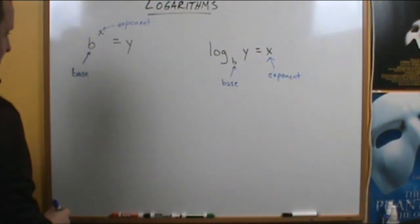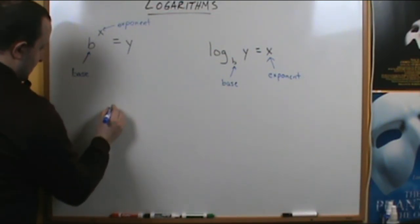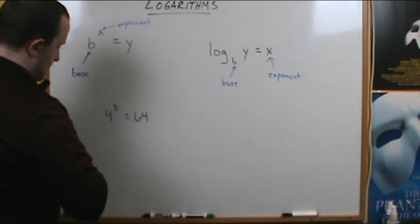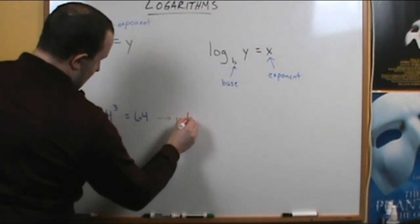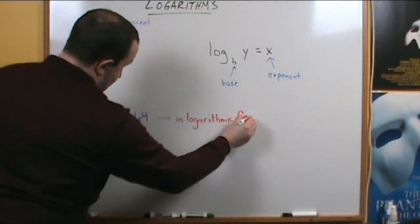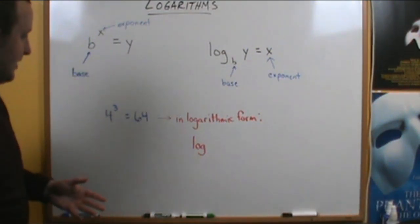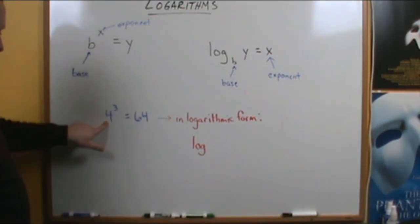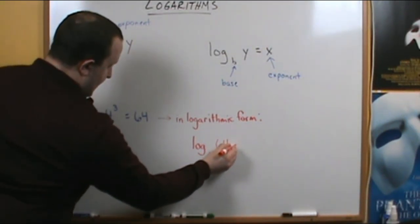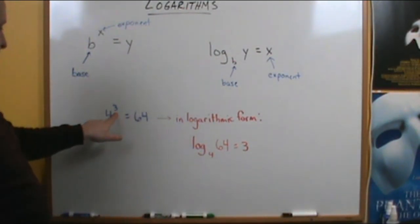To convert into logarithmic form, let's say we choose 4 to the 3rd, which is 64. In logarithmic form, that would be the log — logarithm — of base 4 of the value 64, that's equivalent to 3. The logarithm with base 4 of 64 is equivalent to this exponent.